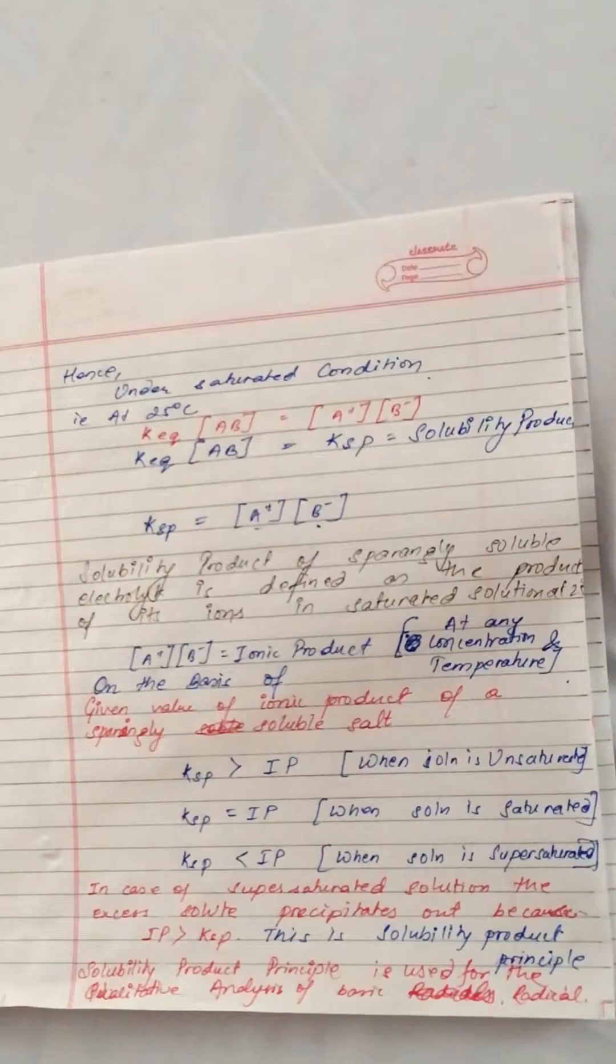A plus times B minus is the ionic product. On the basis of the given value of ionic product of a sparingly soluble salt: if KSP is greater than IP, it is unsaturated; if KSP equals IP, it is saturated; if KSP is less than IP, it is supersaturated.